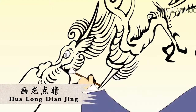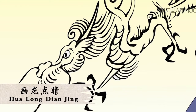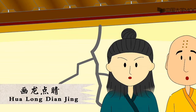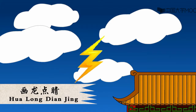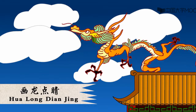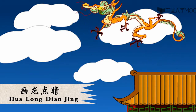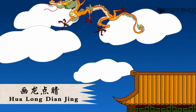Hualong means painting a dragon and Dian Jing means adding eyes. The legend says that when eyes were added to an almost finished and perfect painting of a dragon, the dragon suddenly became alive and flew into the air.